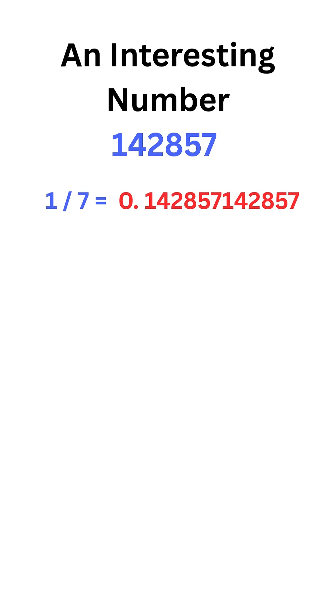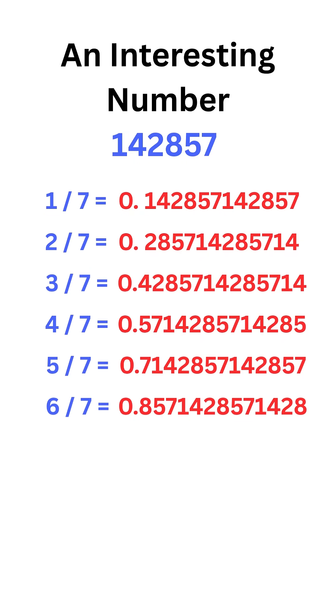But wait, we are not done yet. Let's divide 2 with 7. We get 0.285714285714. Whoa. Same digits repeat again. Let's divide 3, 4, 5, 6 with 7. We get the same digits rotating positions. This is fascinating.